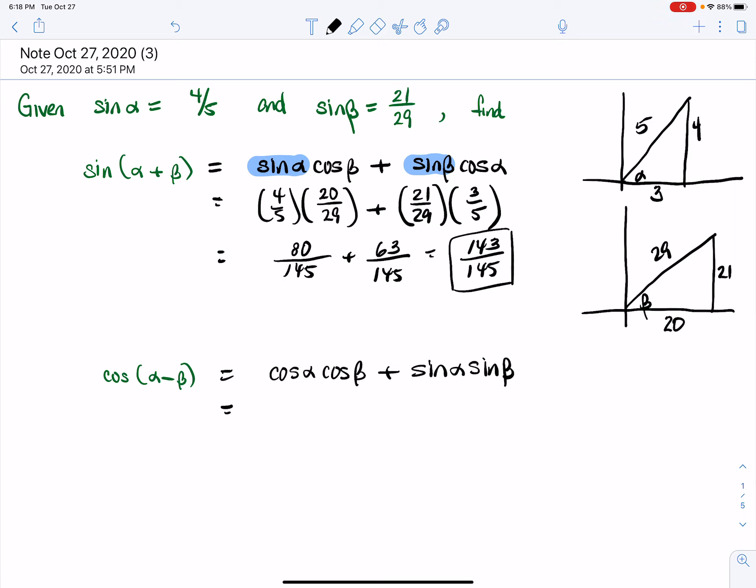Cosine of alpha was 3/5. Cosine of beta was 20/29. Sine of alpha was actually given as 4/5. And sine of beta was given as 21/29. So there we are again. So simplifying again, we have 63 over 145 plus 84 over 145.